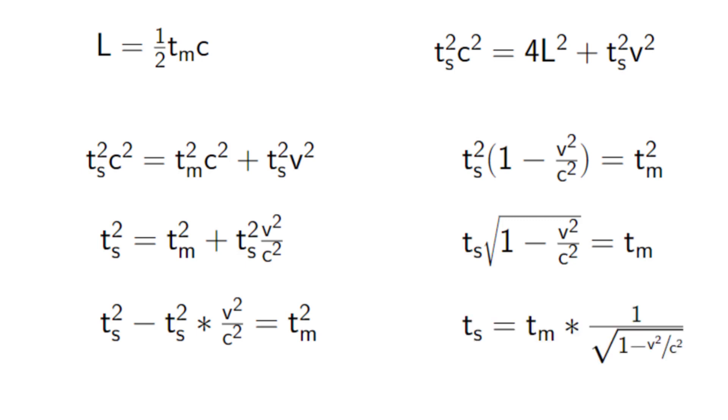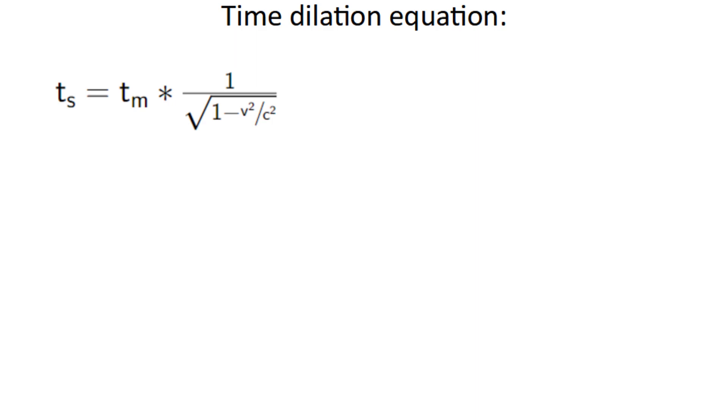ts equals tm times 1 over square root of 1 minus v squared over c squared. This 1 over square root of 1 minus v squared over c squared term actually has a special name. It's called the Lorentz factor, and is extremely important in relativity.